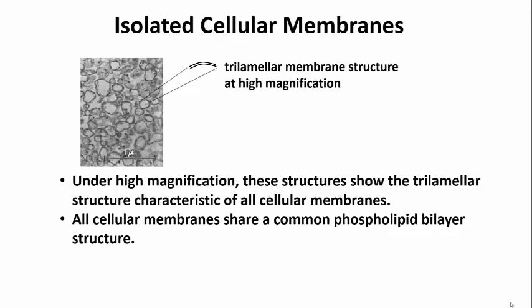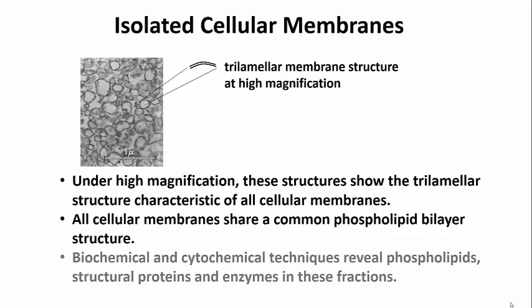Studies reveal that the plasma membrane — indeed each different type of membrane in cells — contains unique molecules that can perform specific functions. Now, do you remember any of the specific functions performed, for example, by a plasma membrane in a eukaryotic cell?